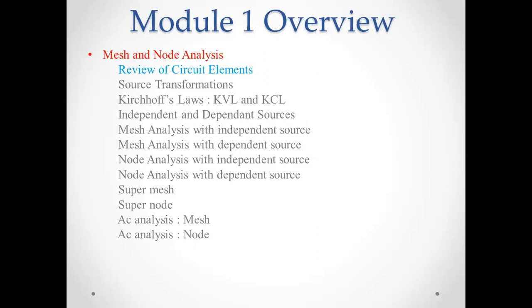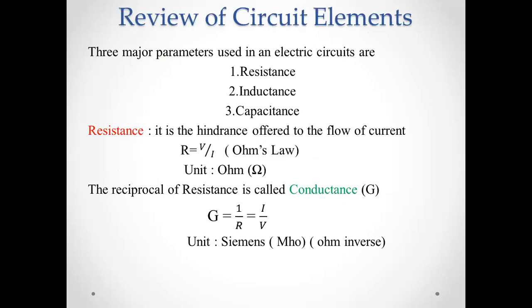The next one is the review of circuit elements. The main parameters of circuit elements are resistance, inductance, and capacitance. Looking at resistance, we are looking at the current flow through a conductor. It is a hindrance offered to the flow of electric current. If we have a metal, the resistance is low.